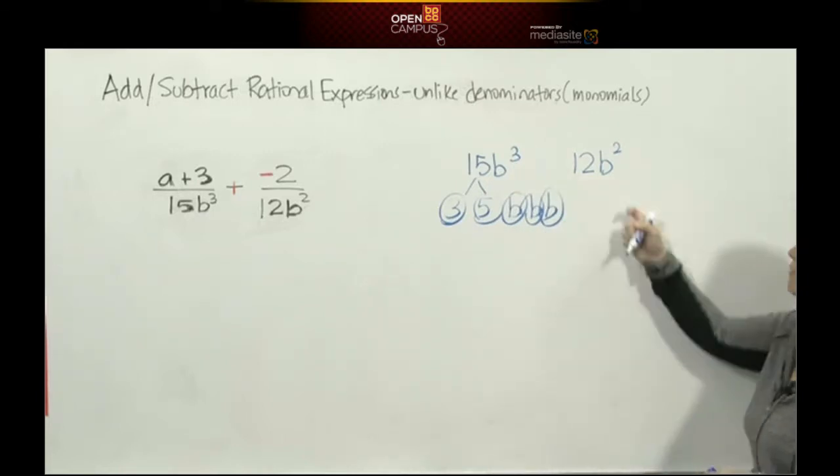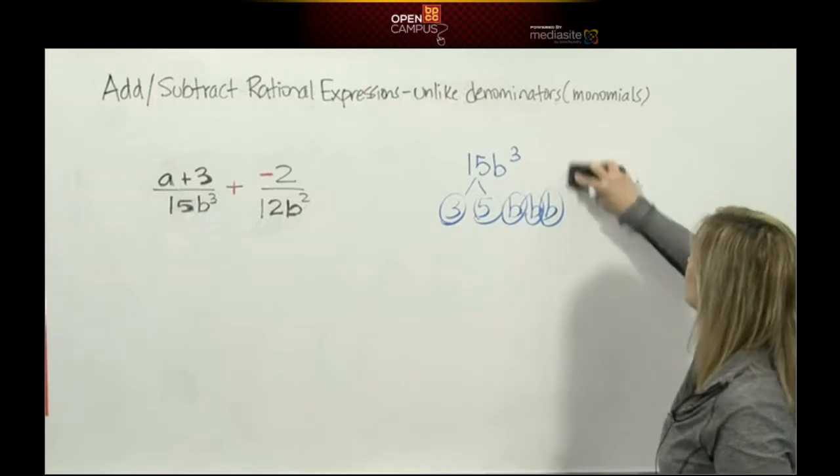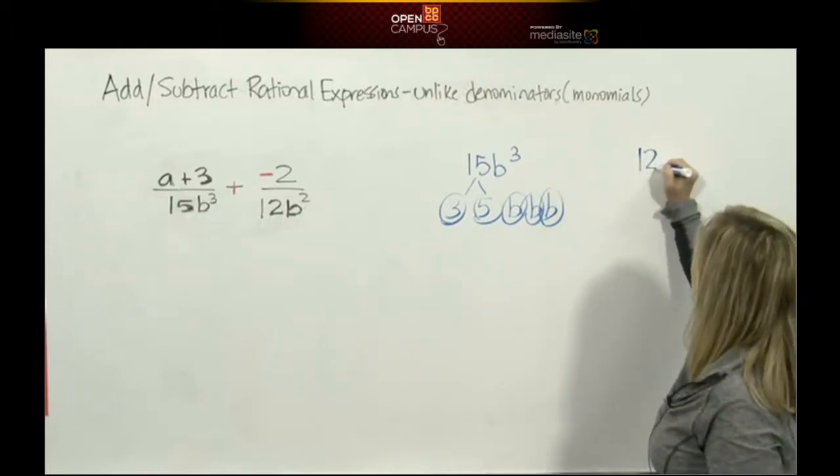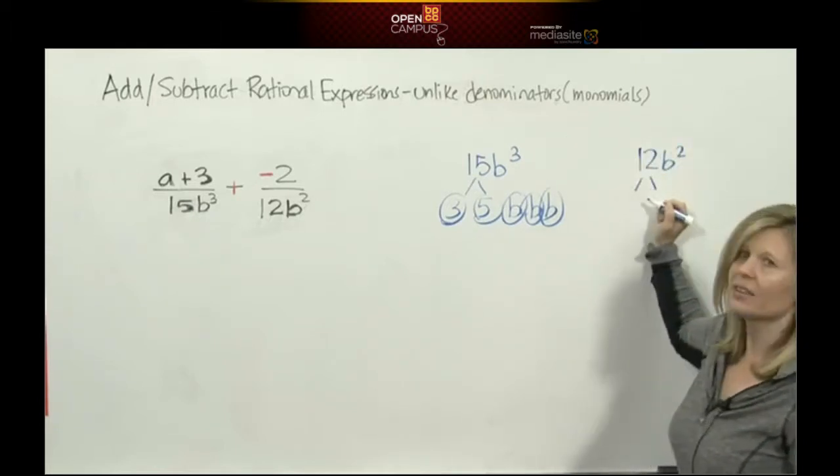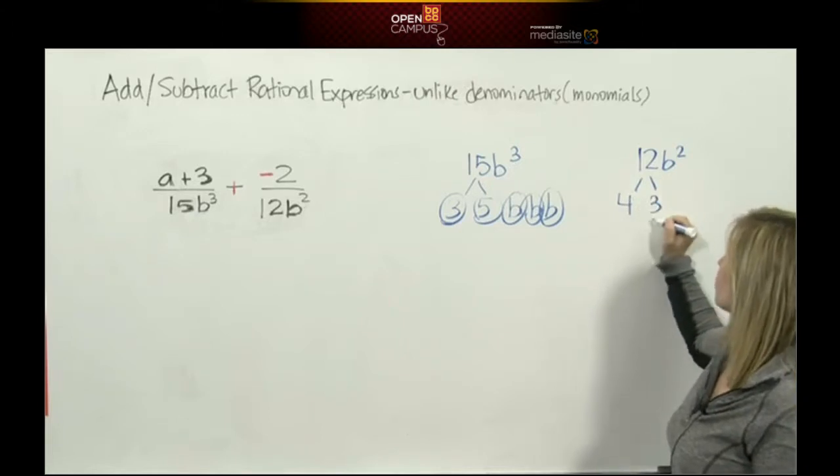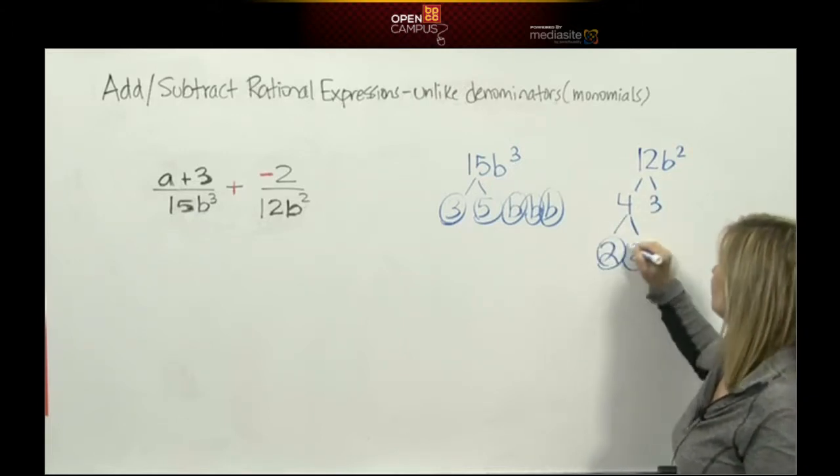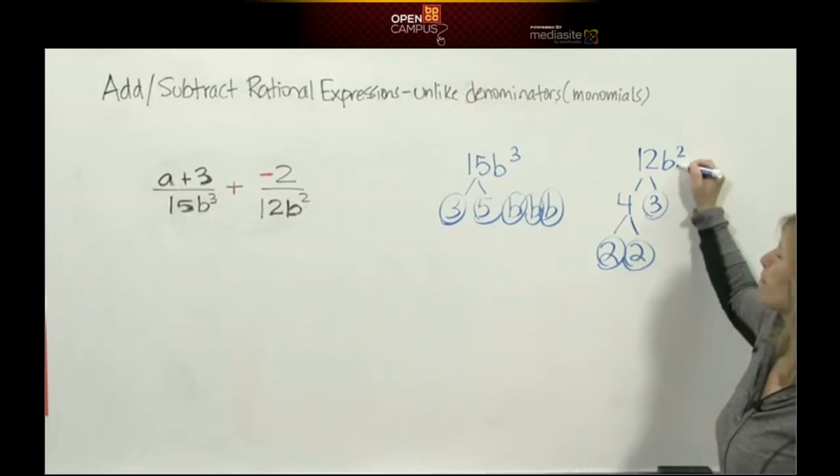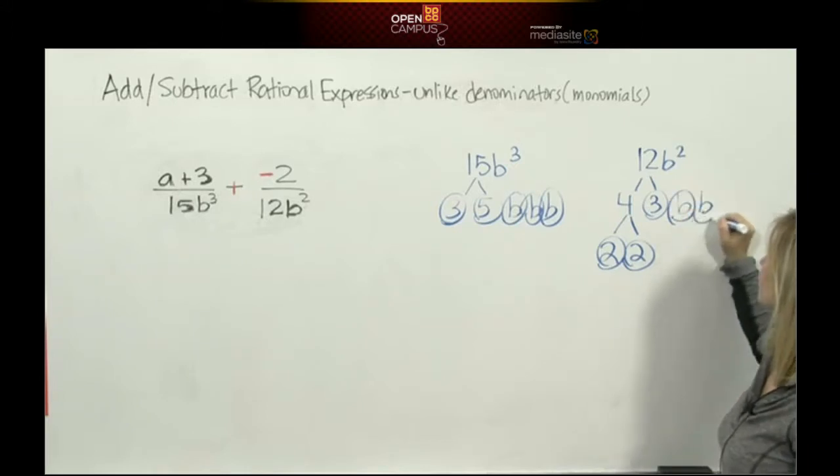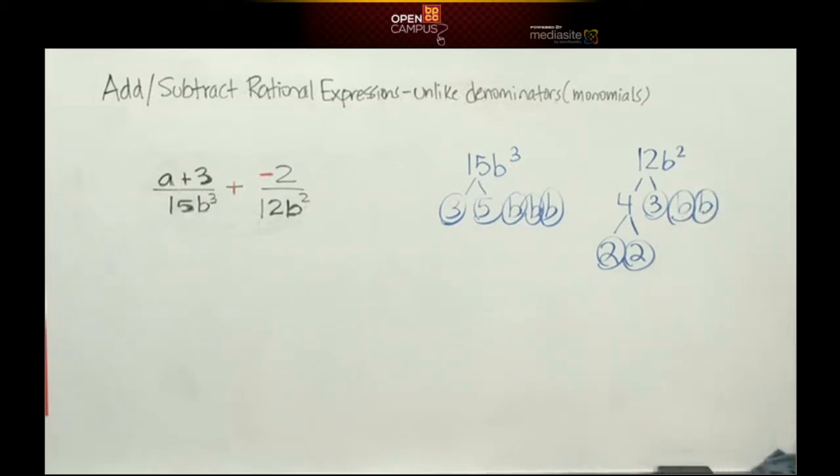Now we're going to factor 12b squared. I can think of 12 as being 4 times 3. 4 is not prime, 4 is 2 times 2. 3 is prime. b squared is not prime, b squared is b times b. So there's my factor tree.